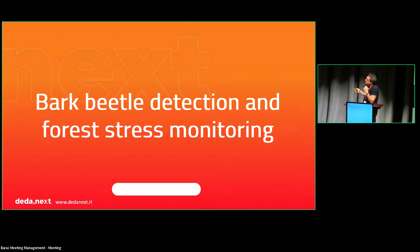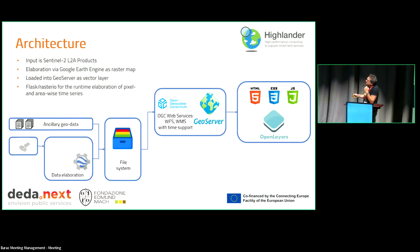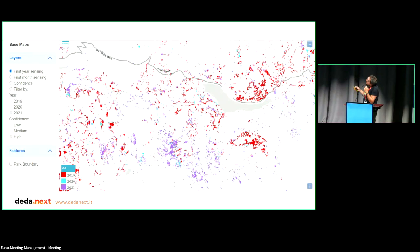Bark beetle detection and forest stress monitoring follows the usual flow: Sentinel-2 data as input, elaboration in Google Earth Engine, publishing with GeoServer and web dashboard. If you saw yesterday's presentation from Edmund Mach, you should recognize the type of information and color coding. What's shown on the map is the location estimated to be affected by bark beetle — these are estimations — and you can filter by the year of first recognition of that area as possibly affected by bark beetle.